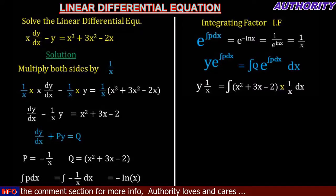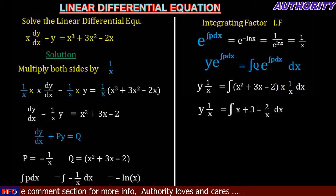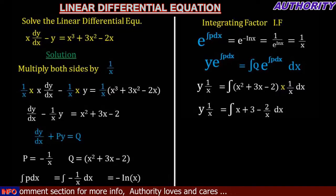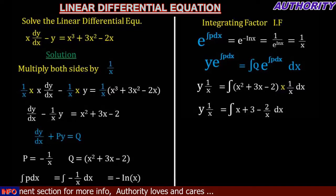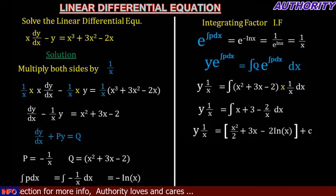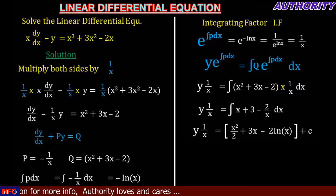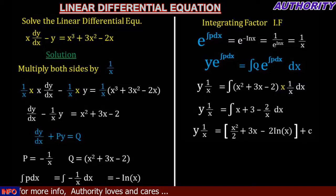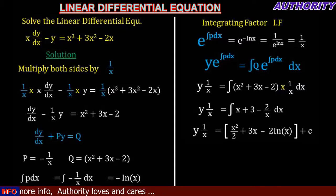When we open the bracket by multiplying 1 over x into (x squared plus 3x minus 2), we get the integral of (x plus 3 minus 2 over x) dx. Integrating the right-hand side: integrating x gives x squared over 2, integrating 3 gives 3x, and integrating negative 2 over x gives negative 2 ln(x), plus the constant C.